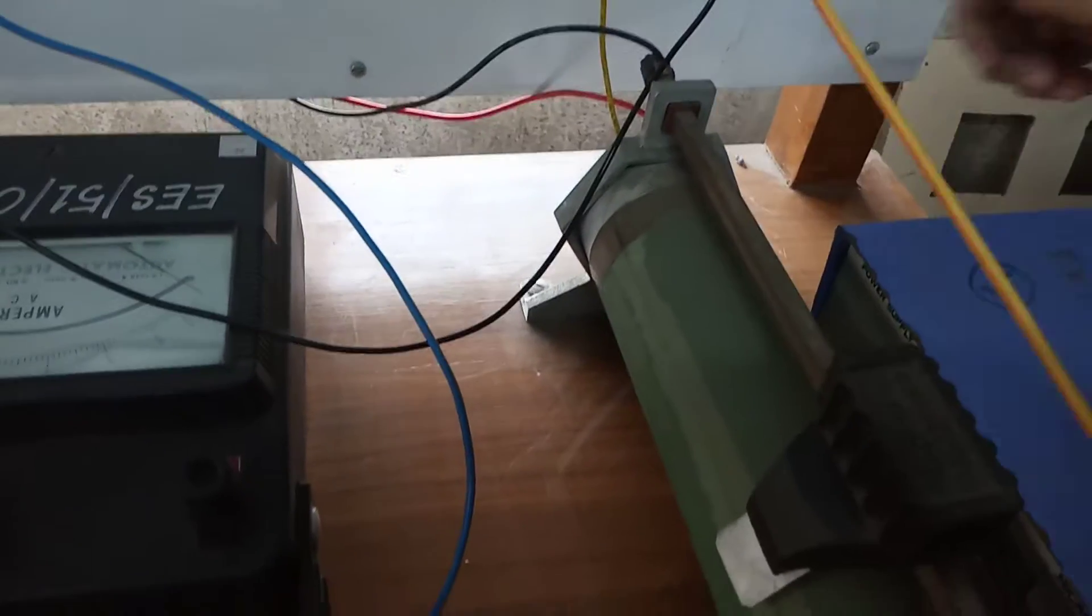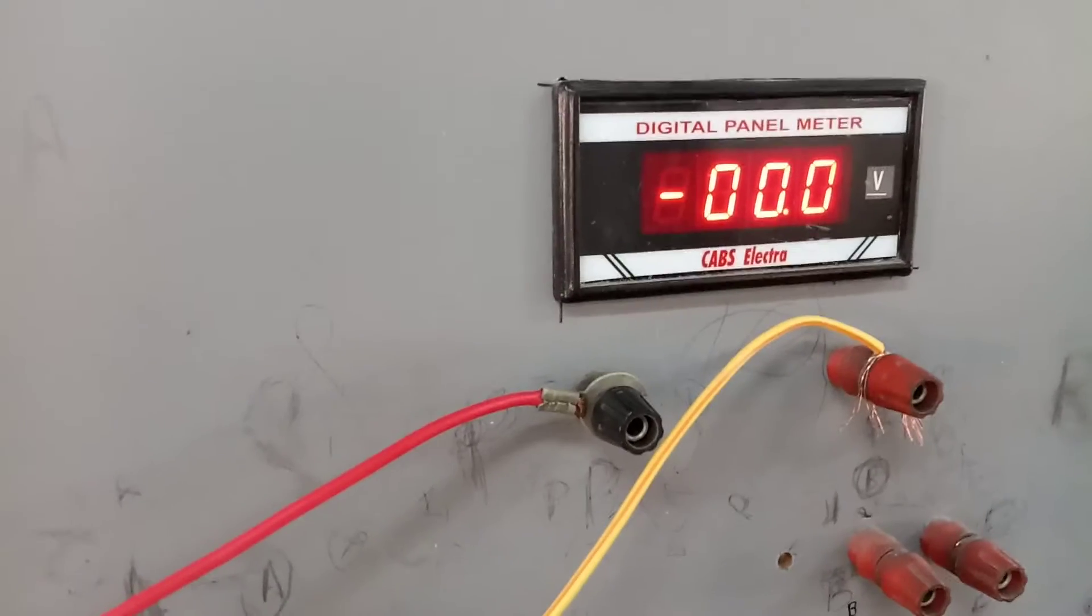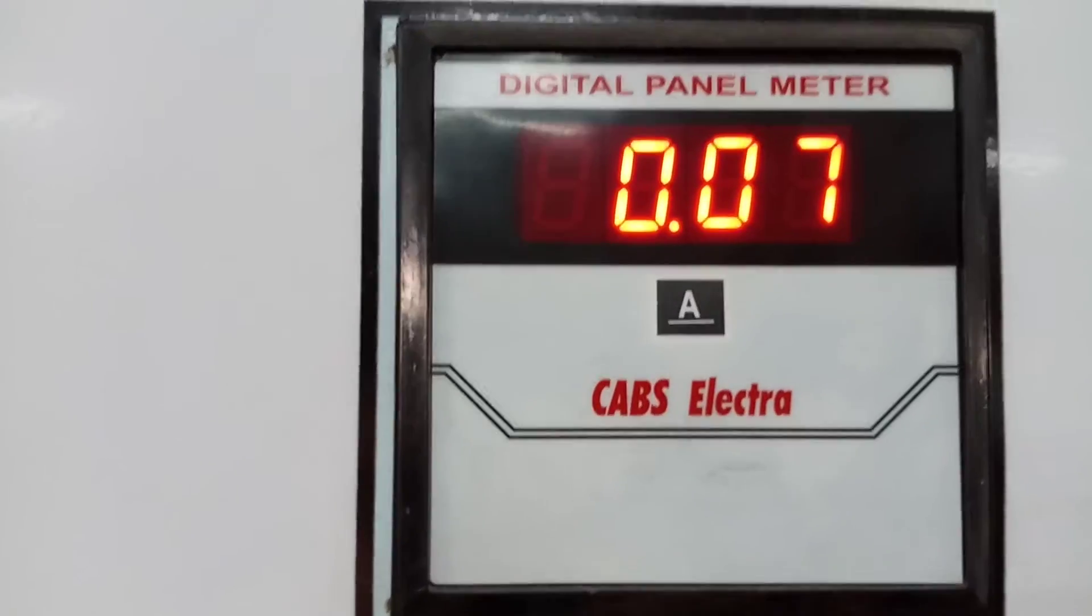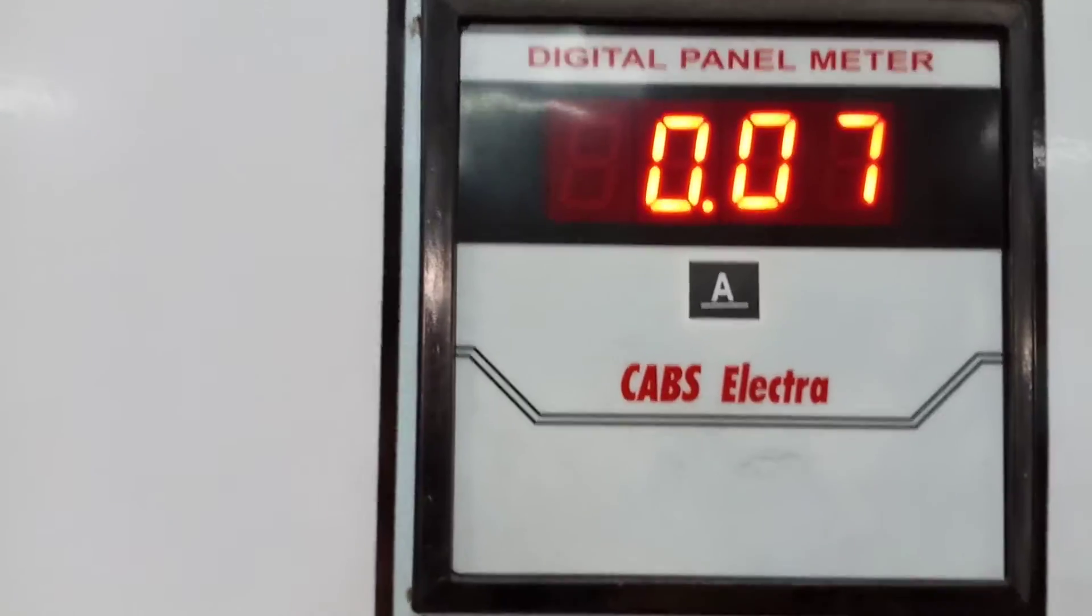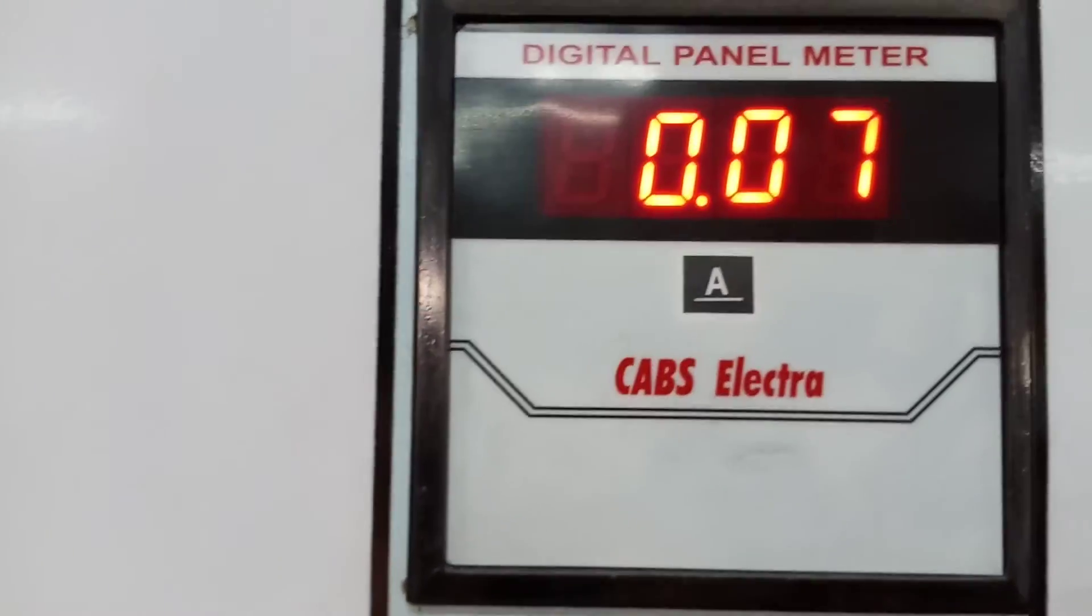So now we will short it. We have shorted it. So you can notice it from the voltage value. It is coming out to be 0 since it is shorted. And this is the I short circuit. So everybody can note it down. It is 0.07, ISC. I short circuit is 0.07 ampere.